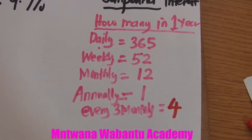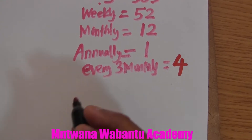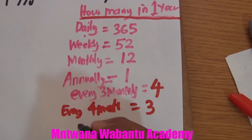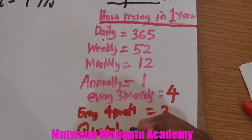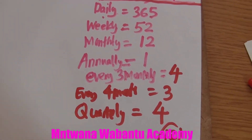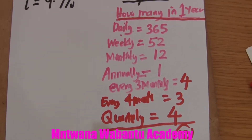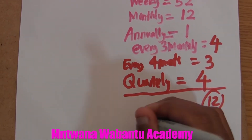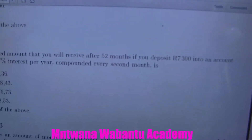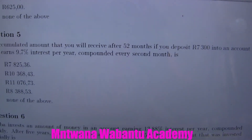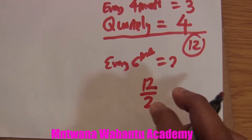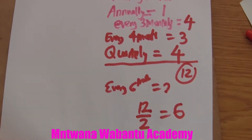If compounded every four months: 3 periods in one year, use 3. If compounded quarterly: 4 quarters in one year — because 12 months divided by 3 equals 4, use 4. If every six months: 2 periods in a year, use 2. So for our question, compounded every second month: 12 divided by 2 equals 6 periods in one year, so we use 6.